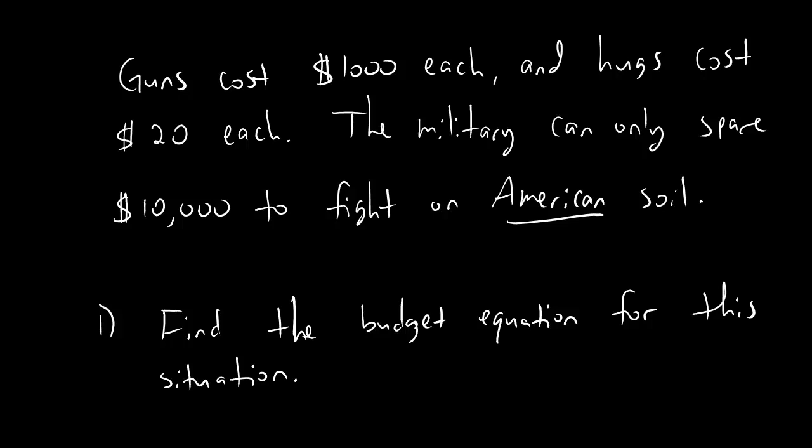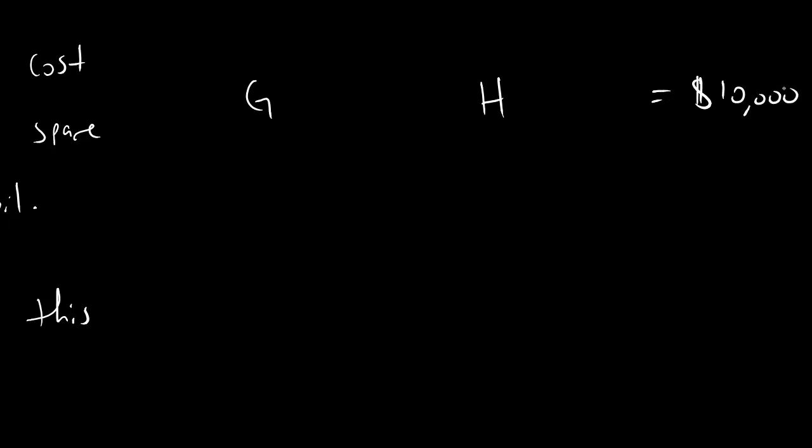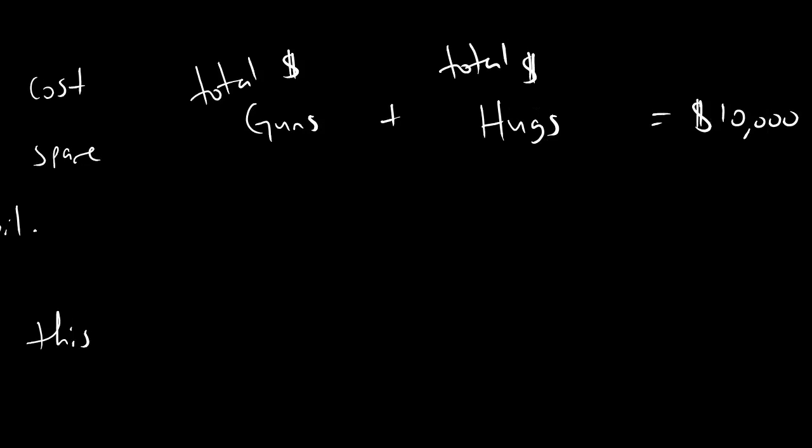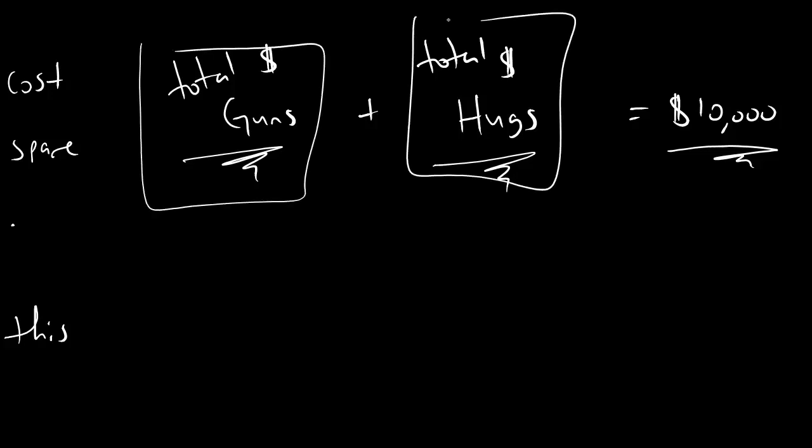And the first thing we want to know is what's the budget equation for this situation. Well, you probably haven't seen this term before, budget equation. But it's pretty straightforward, and once you see me do it for this problem, it'll make sense for you for other problems. The idea behind the budget equation is this. We know we're going to have expenditures for guns. And we know we're going to have expenditures for hugs. And we know that the total expenditure is going to be $10,000. And so the idea is that the total money for guns plus the total money for hugs should add up to the total amount of money we're allowed to spend. $10,000 is the total amount of money we're allowed to spend. And that's going to get divided up between how much we spend on guns and how much we spend on hugs.